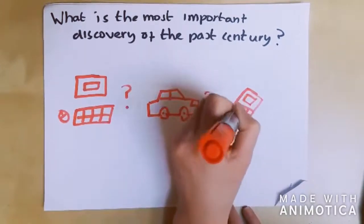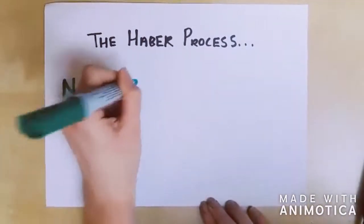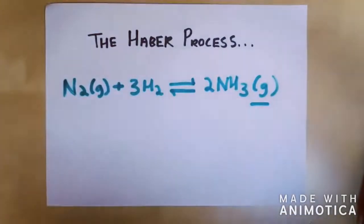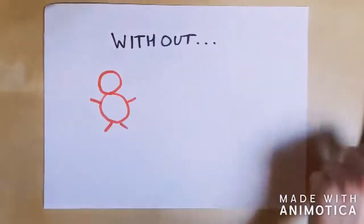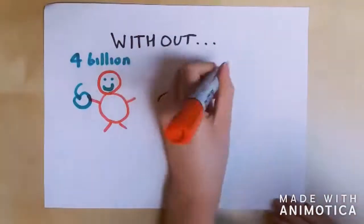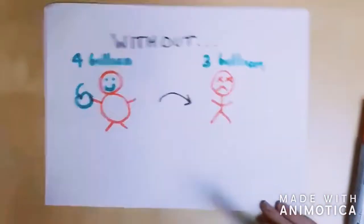Some would argue it's this process, the Haber process. A nitrogen gas molecule plus three hydrogen gas molecules react to produce two ammonia gas molecules. Without this reaction, farmers would be capable of producing food for just over 4 billion people. Our current population is just over 7 billion, so without this process, 3 billion people may starve.